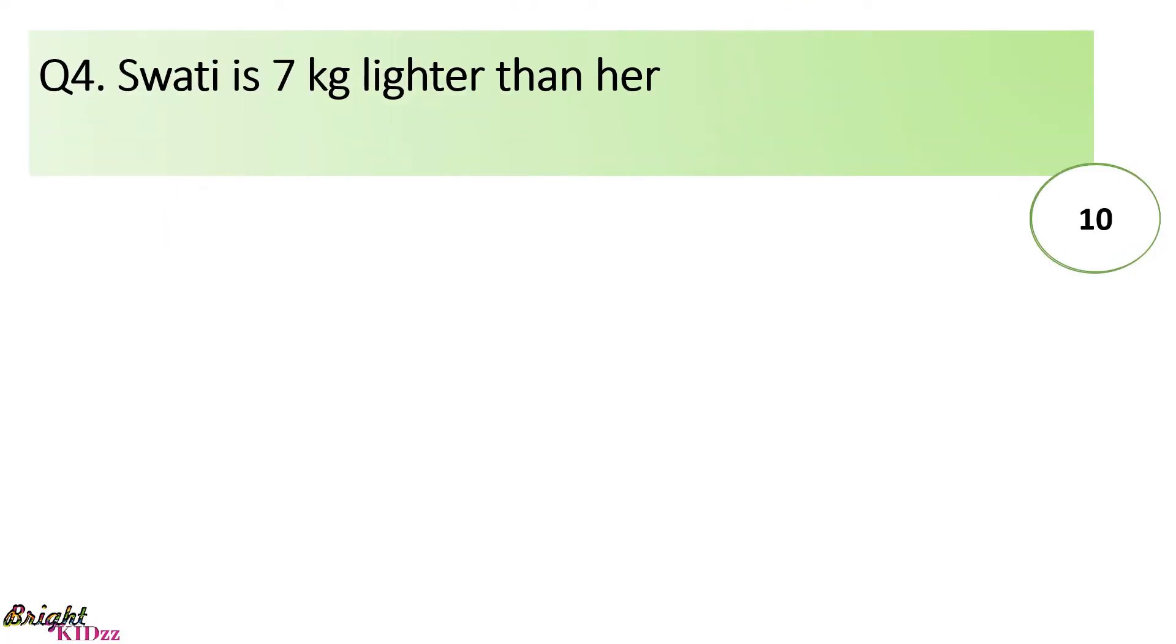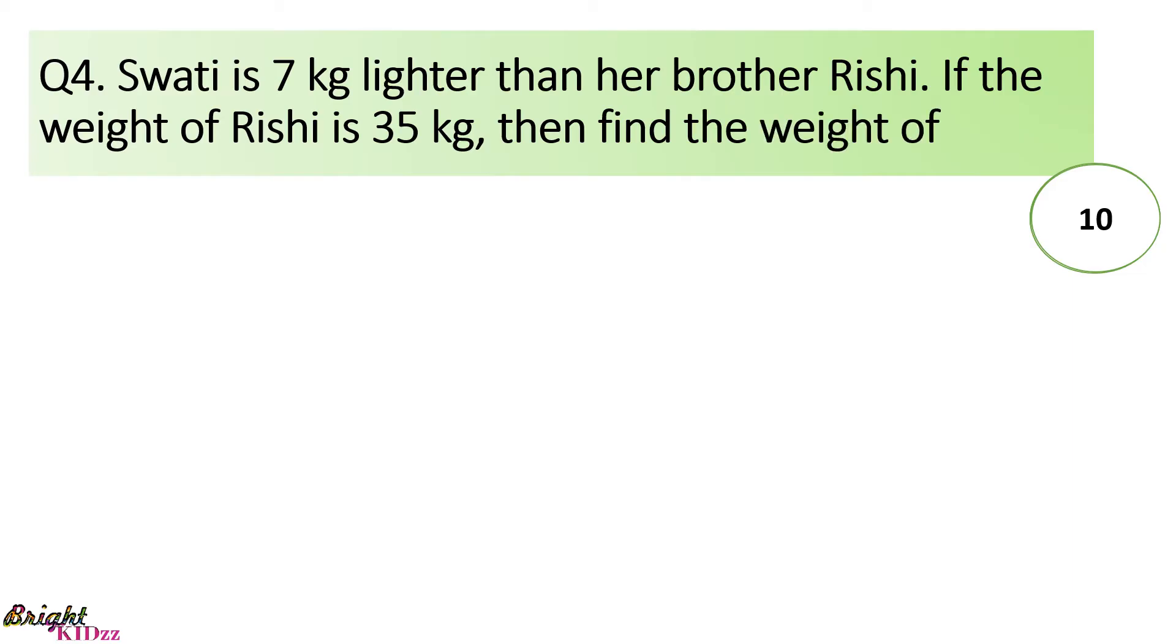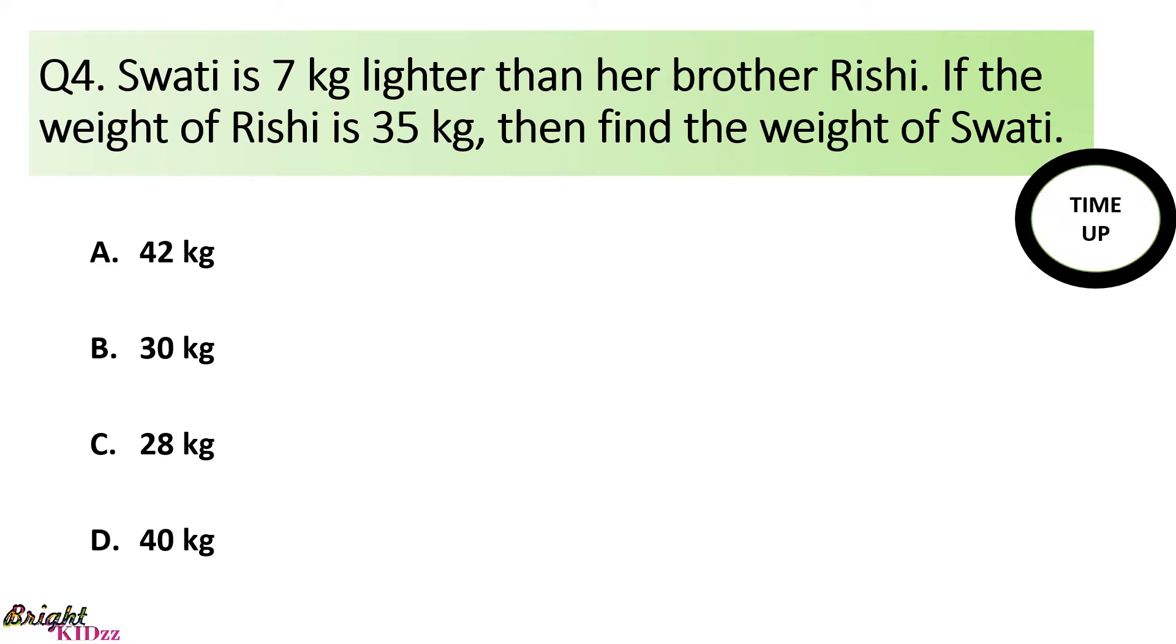Swati is 7 kg lighter than her brother Rishi. If the weight of Rishi is 35 kg, then find the weight of Swati. 35 minus 7 kg equals to 28 kg is the weight of Swati.